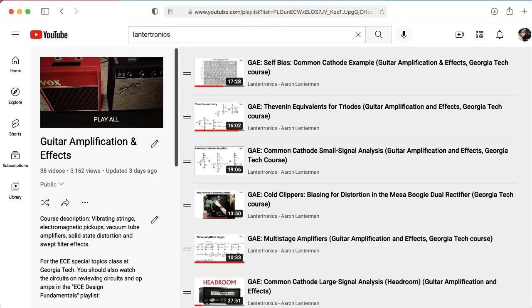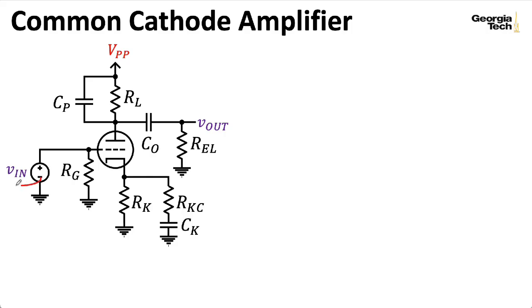We've spent a lot of time looking at the common cathode amplifier. It was basically the first amplifier stage that we studied in depth. So VIN is our input. RG is our grid leak resistor. RK is our cathode resistance. And if we're using the possibility of bypassing the cathode with this cathode bypass capacitor, I'm also including the possibility of putting some resistance in series with it. This isn't very common, but it does show up in things like the Mesa Boogie Dual Rectifier that we've looked at a lot. So I want to include it.